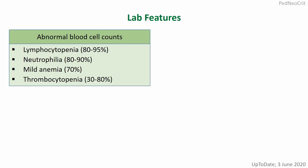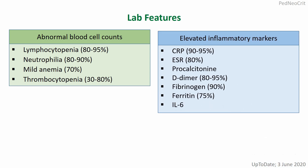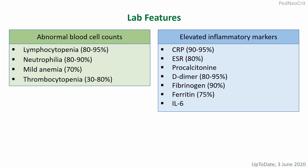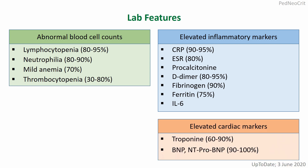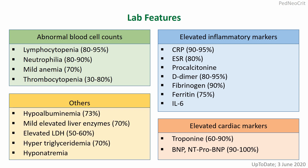Lab features include abnormal blood counts — lymphopenia, neutrophilia, mild anemia, lymphocytopenia. Elevated inflammatory markers: CRP, ESR, procalcitonin, D-dimer, fibrinogen, ferritin, and interleukin-6. Elevated cardiac markers: troponin, BNP, and NT-proBNP. Others include low albumin, mildly elevated liver enzymes, elevated LDH, hypertriglyceridemia, and hyponatremia.